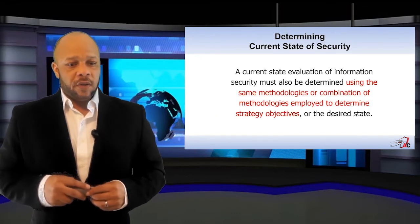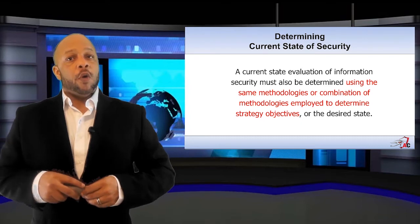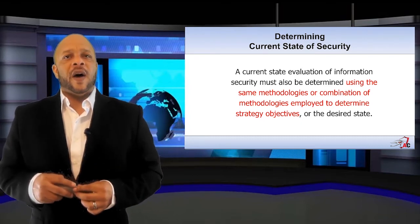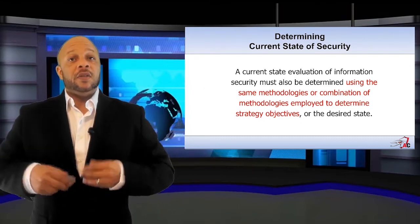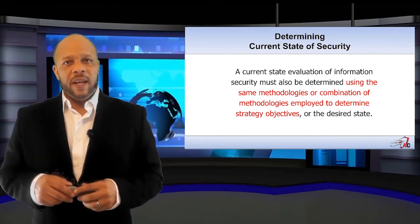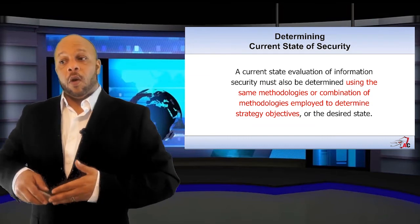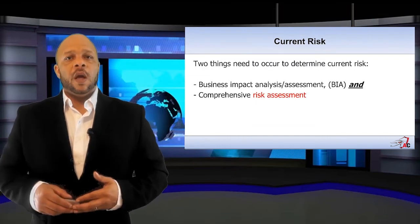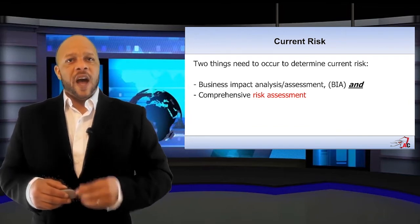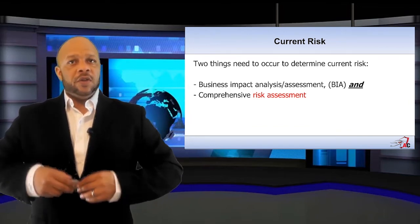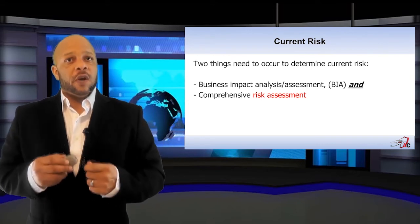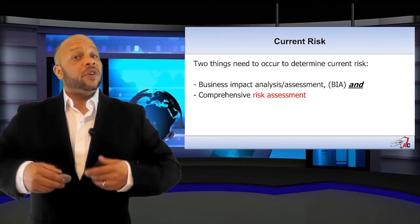We've looked at our desired state and some risk objectives. Now we need to identify our current state. To do so, we need to use the exact same methodology, or combination of methodologies, as we did to determine our desired state. Two things must occur to determine your current risk posture: a business impact analysis or assessment, and a comprehensive risk assessment.